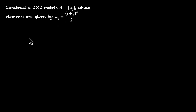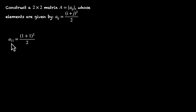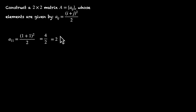Let's look at an example. If you plug in 1 and 1, we'll get the first row and first column — that's our first element, A11. That's going to be equal to 1 plus 1, replacing i by 1 and j by 1. So (1+1)² divided by 2 is 2² over 2, which is 4 over 2, that's 2. So the formula says the first row, first column element is equal to 2.